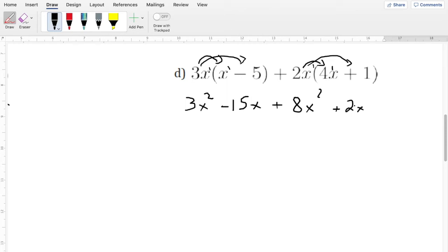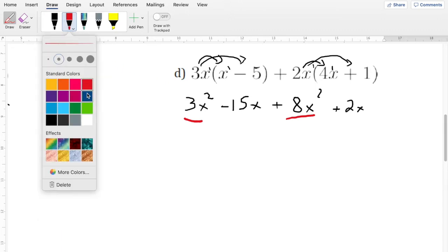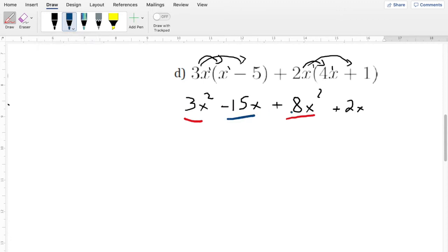Okay, so now, we have to collect like terms. So let's get here, and we'll underline our like terms. So x squareds are going to go with x squareds. And then, let's pick a new color. Then our x's are going to go with x's.